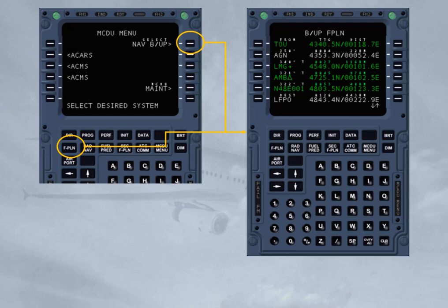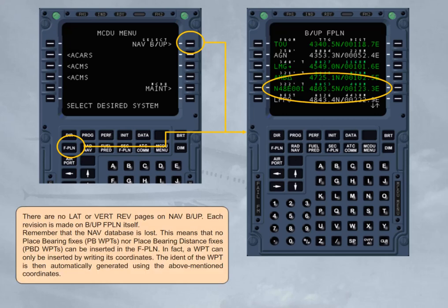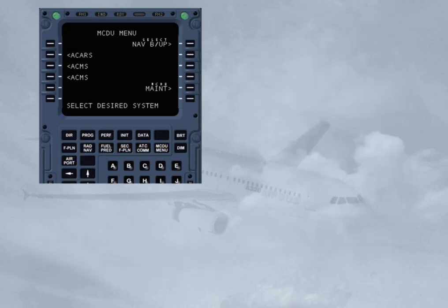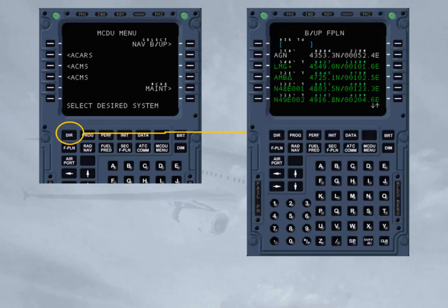This means that no place-bearing fixes nor place-bearing distance fixes can be inserted in the flight plan. A waypoint can only be inserted by writing its coordinates. The ident of the waypoint is then automatically generated using those coordinates. The backup flight plan direct-to function is called by pushing the DIR key while NAV Backup is active and the aircraft position is valid. It allows the selection or insertion of the desired waypoint, and the information given for each waypoint is the same as found on the Backup Flight Plan.